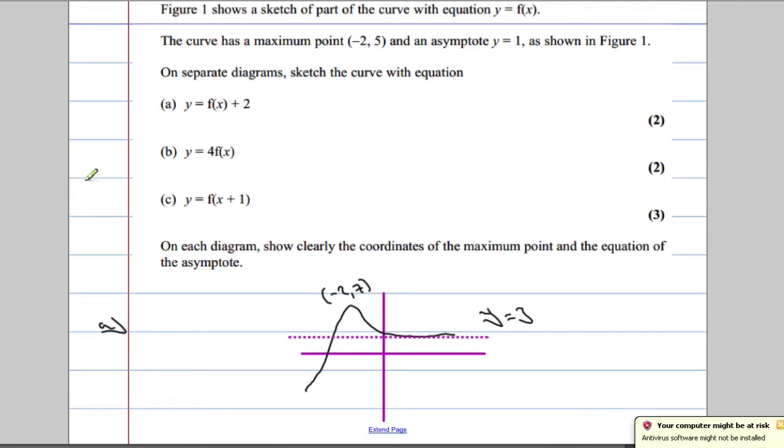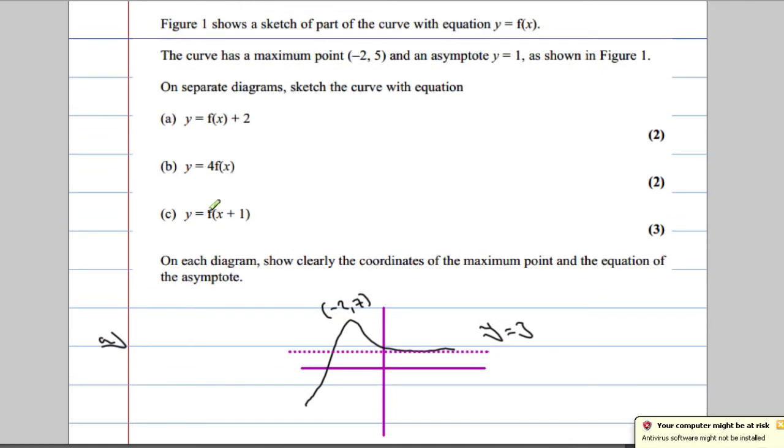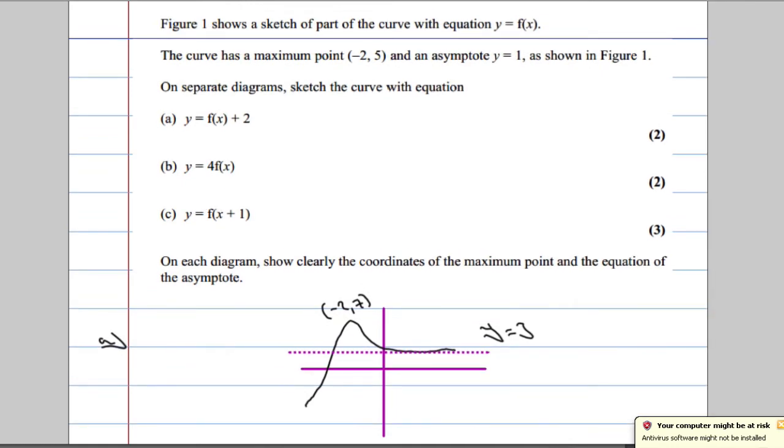Okay, in part b now, we're asked to sketch y equals 4 times f of x. So part b, y equals 4 times f of x. We've got basically a times f of x. What happens here?